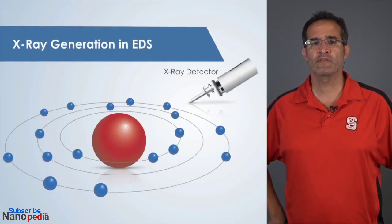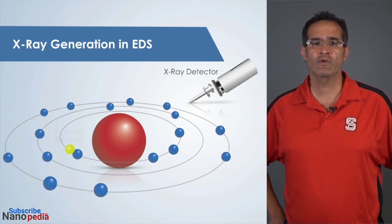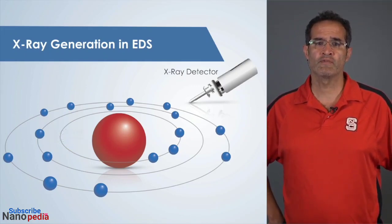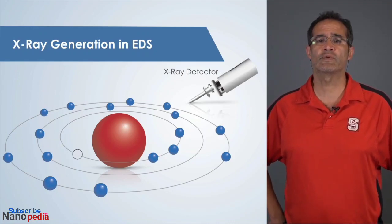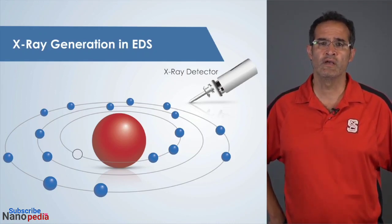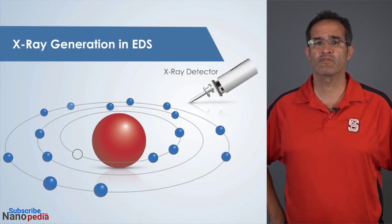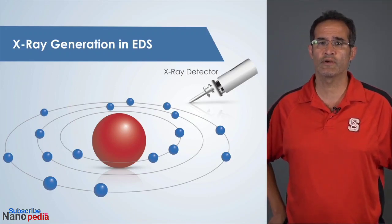To understand how this happens, let's consider a single atom in the sample. When an electron from the incident beam imparts enough energy to the sample, an electron can be ejected from one of the atom's electron shells. This leaves a vacancy — like a hole in the electron shell where the electron originally was. For the atom to return to a stable state, an electron must replace the one that was emitted.